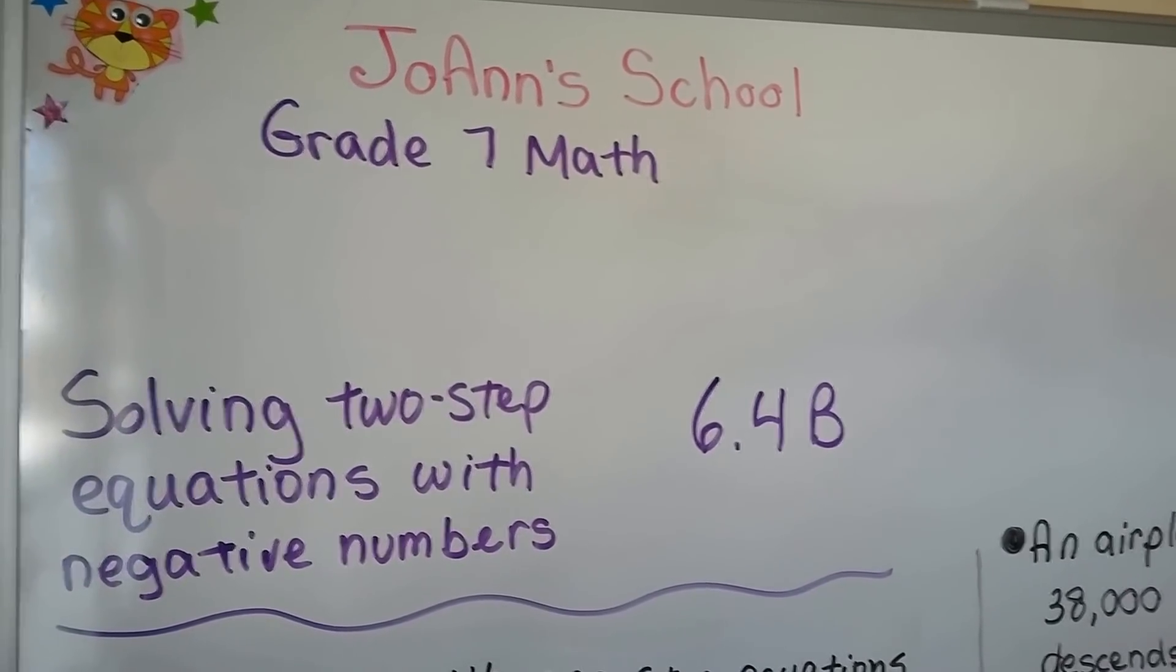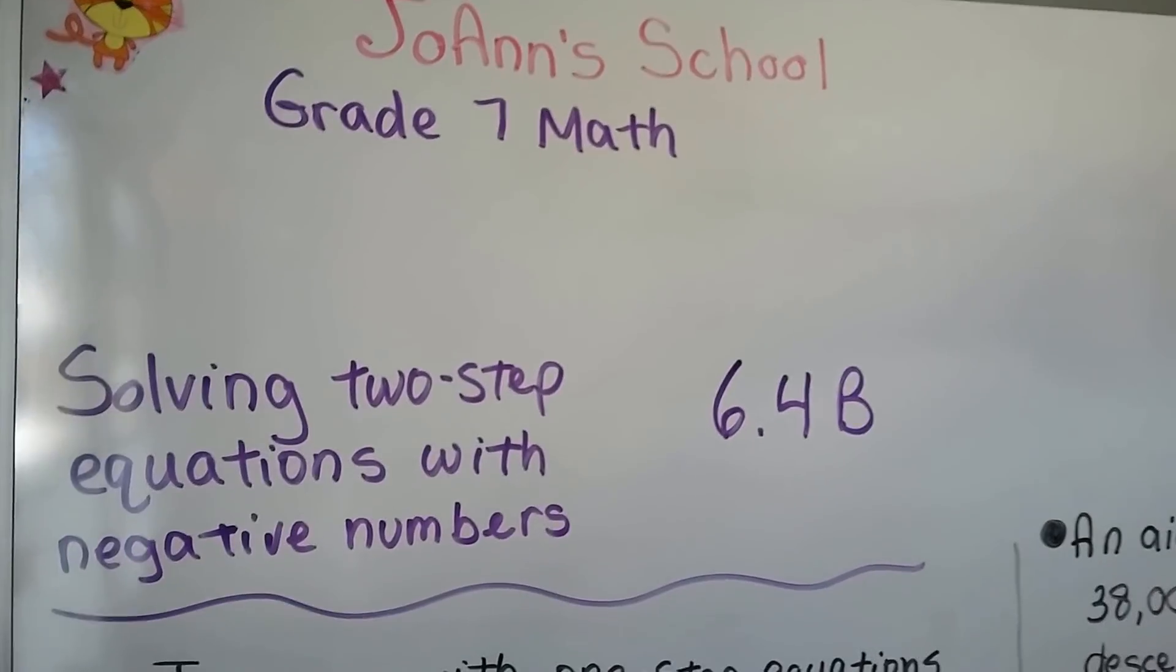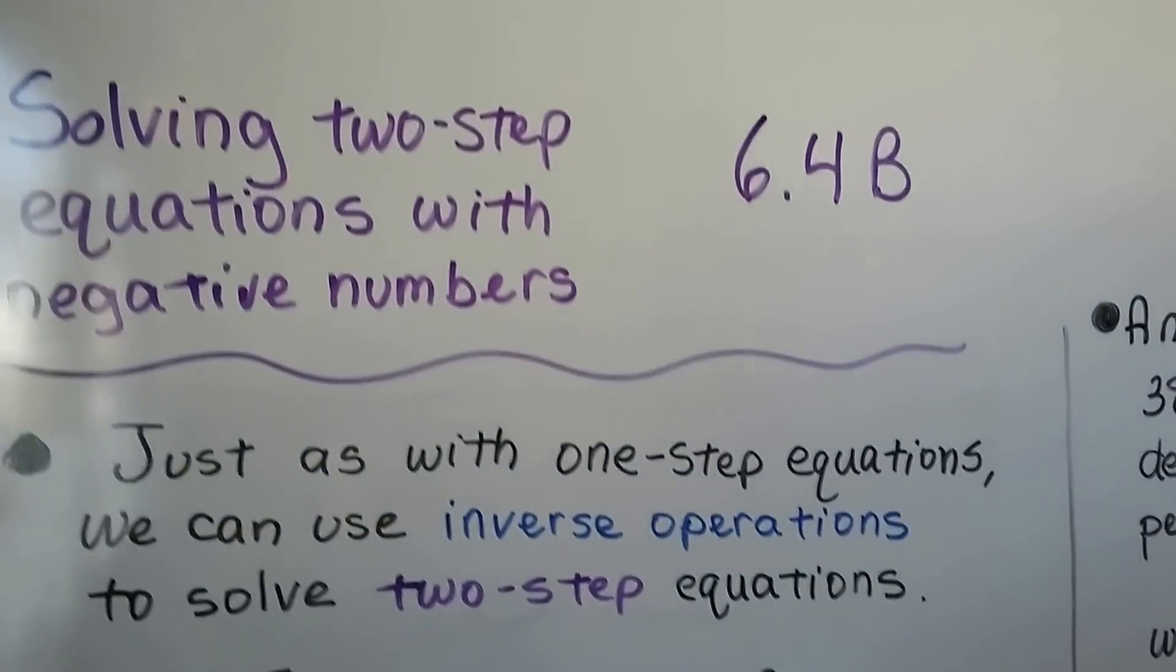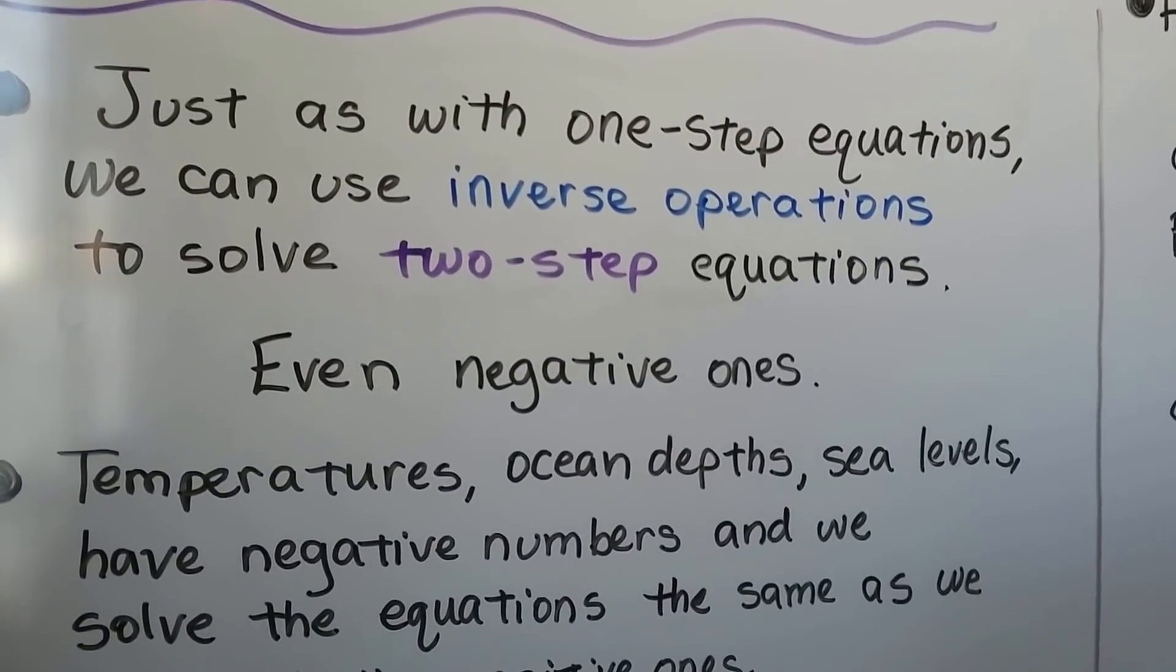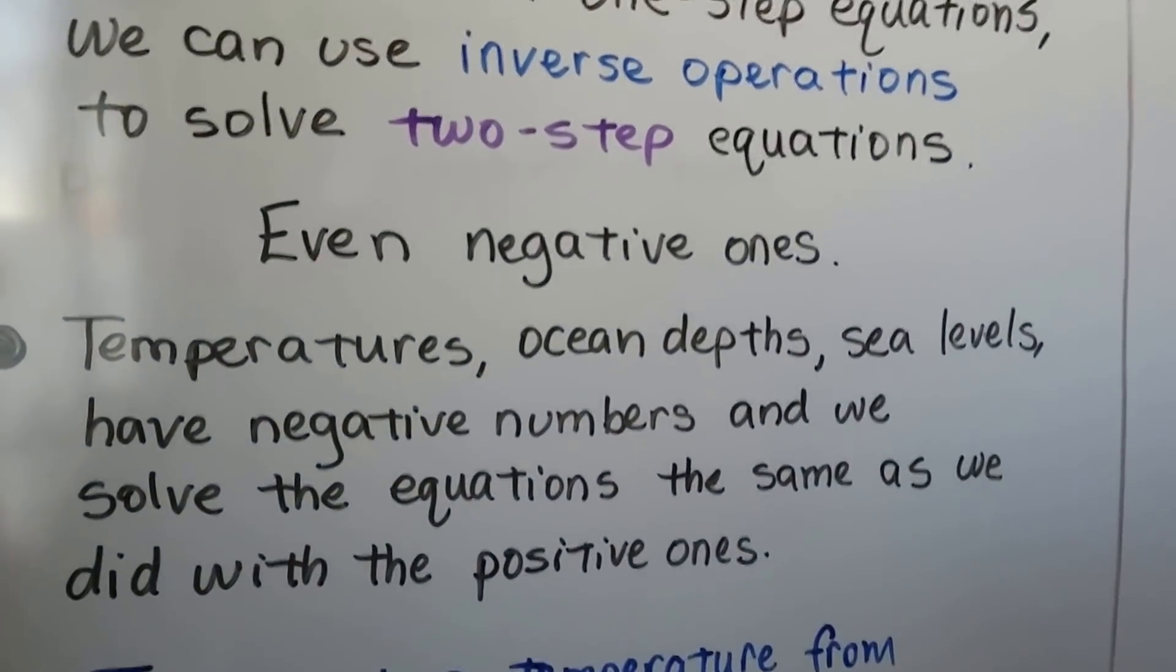Solving two-step equations with negative numbers, number 6.4b. Just as with one-step equations, we can use inverse operations to solve two-step equations, even negative ones.